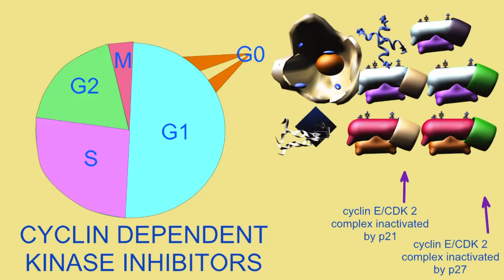Without cyclin D-CDK4 activity, this inactive cell is less likely to produce cyclin E. Also, a number of the cyclin-dependent kinase inhibitors, such as proteins 21 and 27, can bind to the cyclin E-CDK2 complex and inhibit its activity.